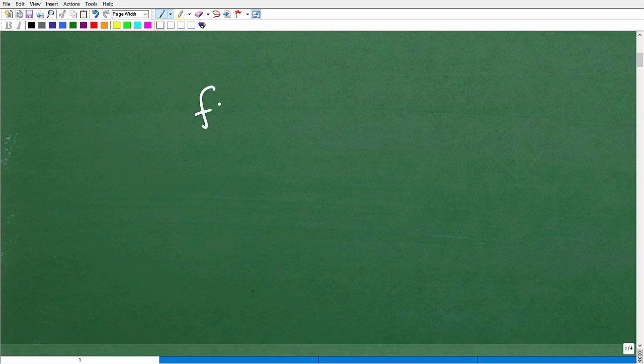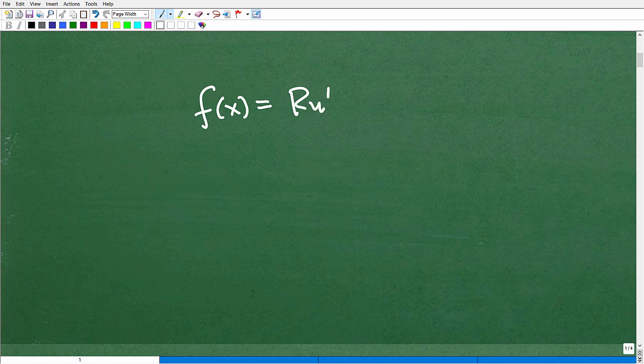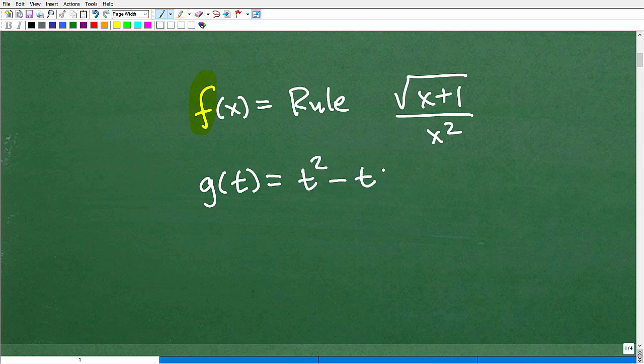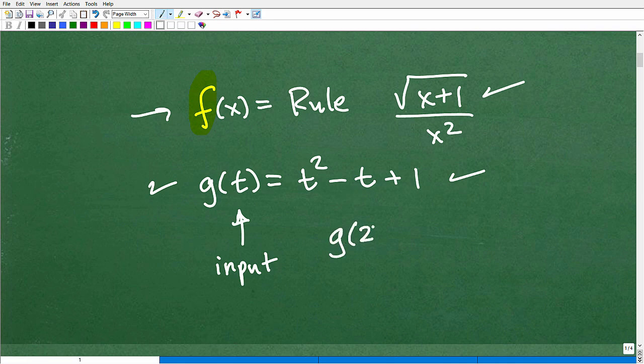The function is just some sort of rule. We can have different names - f of x, or g of x. Let's do g of t equals t squared minus t plus 1. Here's a function. These have particular rules. What is a function? You input certain values into a function. Like here in this g of t function, I can plug in g of 2, and wherever I see a t, I'm going to plug in a 2, and then calculate the answer.